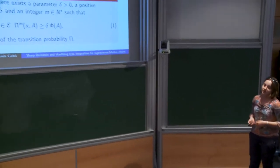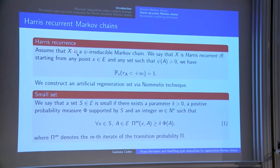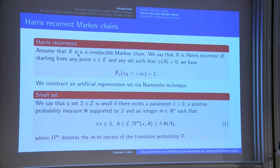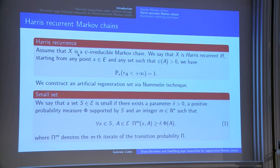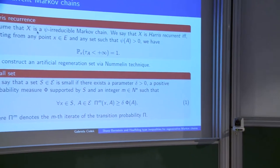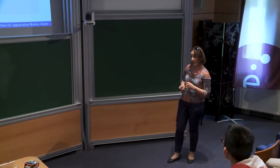We are also interested in the more general class of Harris recurrent Markov chains. Harris recurrence is a communication property: when X is Phi-irreducible, the chain visits any set of positive Phi-measure infinitely many times with probability 1. However, this does not ensure that our chain is atomic — we don't know if there exists a set from which all transition probabilities are the same. We would also like to use regeneration techniques in this general Harris recurrent case.